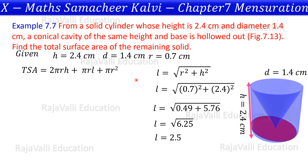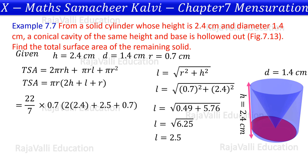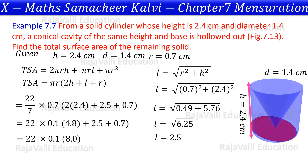The total surface area formula is then simplified. The calculation is straightforward, and the total surface area of the remaining solid is equal to 17.6 cm². This is the answer.